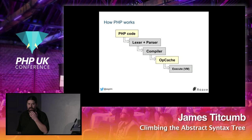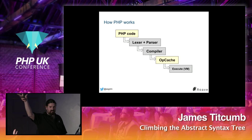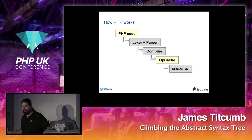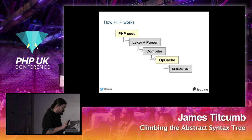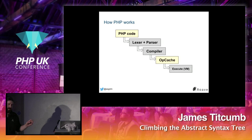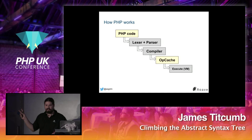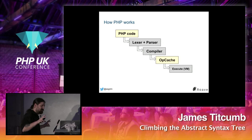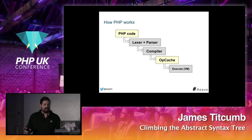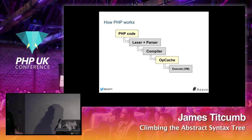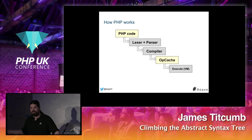How many people know roughly this cycle of how PHP works? PHP code is fed into this thing called a lexer. The lexer generates tokens. Those tokens are fed into a parser, which generates an AST. The AST is compiled to generate opcodes. The opcodes are stored in the opcache and executed in a virtual machine — a virtual CPU that executes these opcodes and makes things happen.